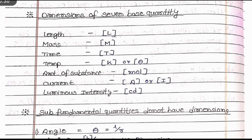The dimensions of the seven base quantities are: length, mass, time, temperature, amount of substance, current, and luminous intensity. Length is denoted by [L], mass is denoted by [M], and time is denoted by [T] under the square bracket.